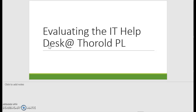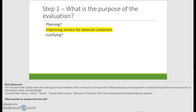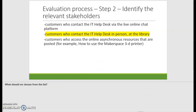So now we're going to do it the other way. We're going to think about the process and apply it to how we could evaluate the IT help desk. We'll go through each one of the steps and talk about how we make the decisions about what is the purpose of the evaluation, what kind of data, who are the stakeholders. We'll go through that and come up with an evaluation that we could do to find some meaningful information to help us make decisions about the IT help desk at Thoroughbottom Library.